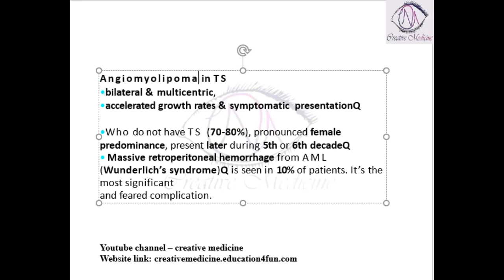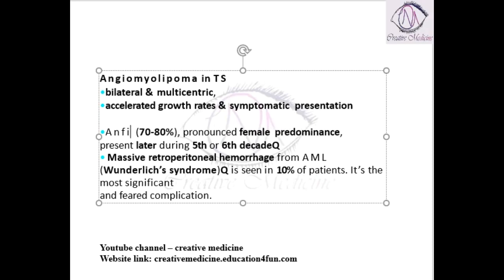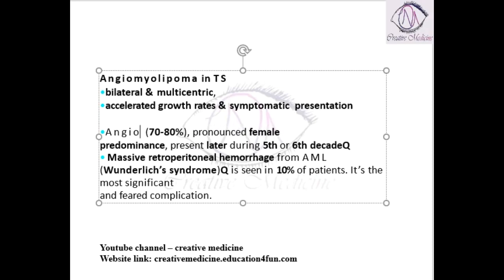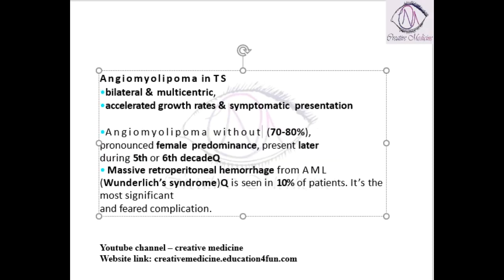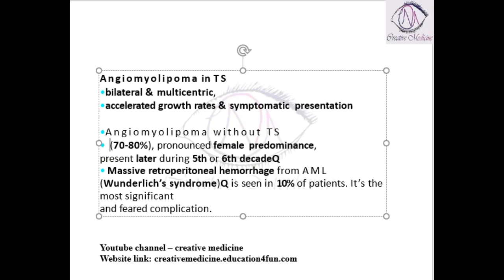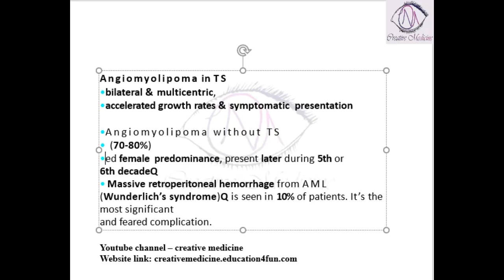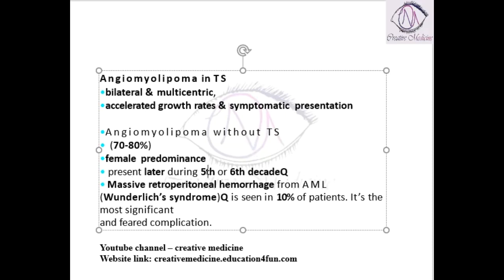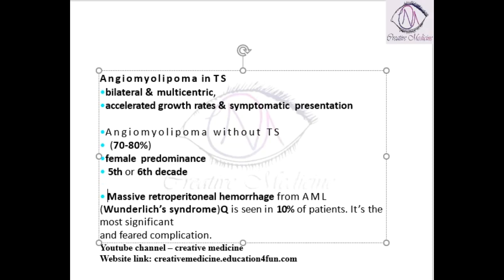Angiomyolipoma in tuberous sclerosis is bilateral and multicentric with accelerated growth rates and symptom presentation. Angiomyolipoma without tuberous sclerosis mainly has female preponderance, is seen in almost 70 to 80 percent of sporadic cases, and presents later in life — in the fifth to sixth decade.